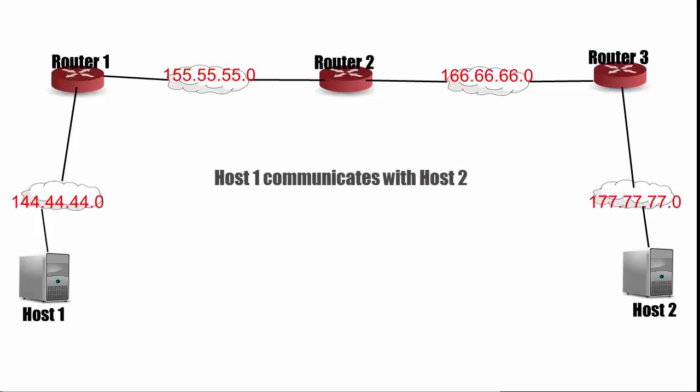Suppose that host 1 is a client that wants to view a web page on host 2, host 2 being a web server. TCP/IP allows host 1 and host 2 to communicate across the internet, while it appears to the application processes on both hosts that they're directly connected to each other. Let's watch the packet get routed across the internet, illuminating the process by which routing occurs.